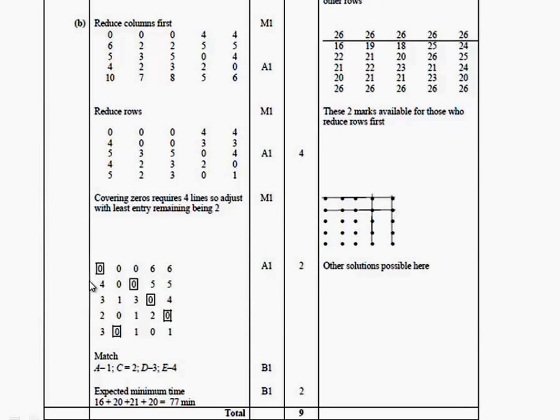Then, we check. We discover that we require five lines. And we then allocate. And the matching gets you one mark. Don't forget to write down the expected time of 77 minutes for the other mark. Look at how the mark scheme presents it and use that to inform you about how best to answer these type of questions.